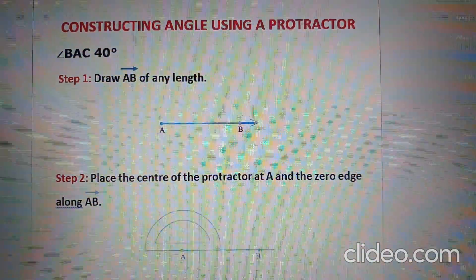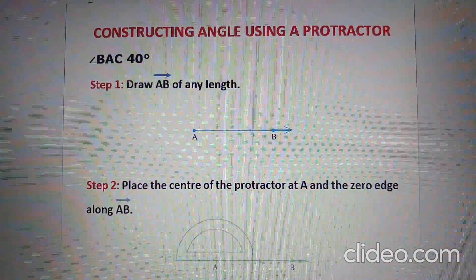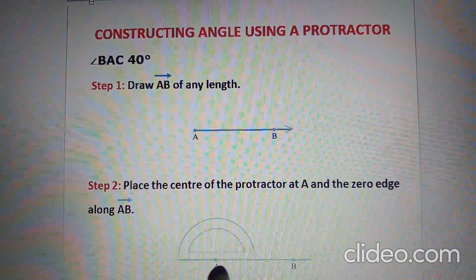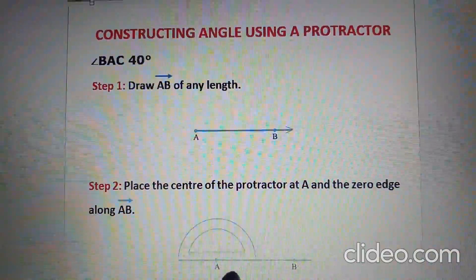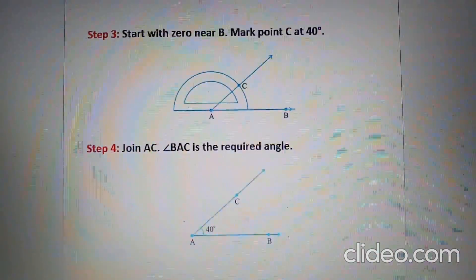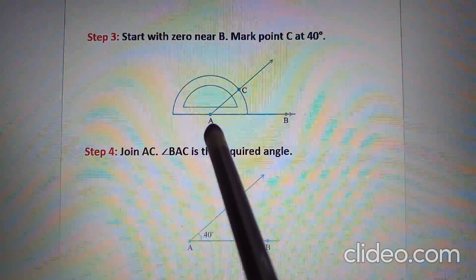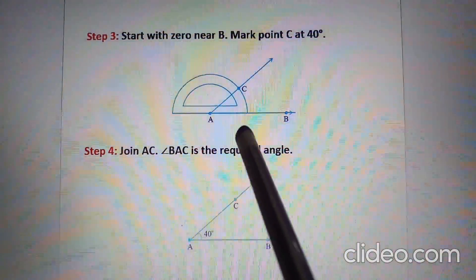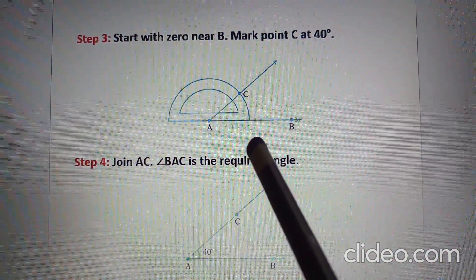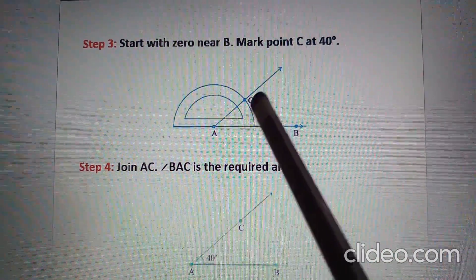Step 1: Using a ruler, draw ray AB. Step 2: Place the center of the protractor at point A and the zero edge along AB. Step 3: As the arm AB is to the right of the center of the protractor, start with zero near point B and mark point C at 40 degrees.